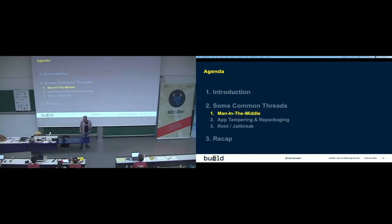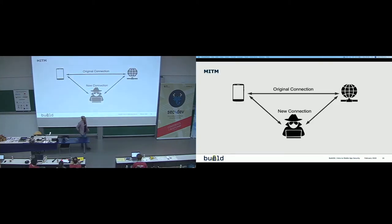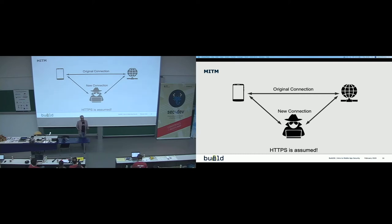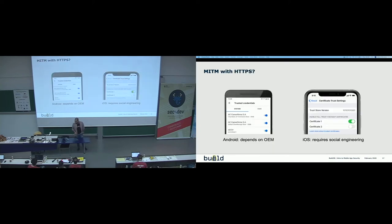Let's talk about some common threats. I'll start with man-in-the-middle. A man-in-the-middle is basically when we have a mobile endpoint connecting to our backend, with data flowing between them, and someone is trying to eavesdrop. Of course, it's 2020 and I assume you all use HTTPS. But the question is — can a man-in-the-middle still happen? HTTPS is encrypting the traffic, so in theory a man-in-the-middle would not be possible. But is it possible to have a man-in-the-middle with HTTPS?